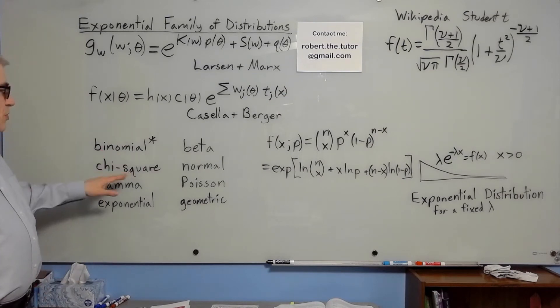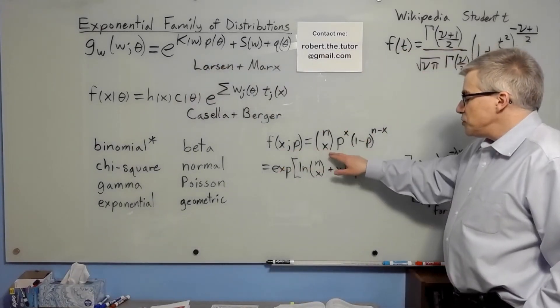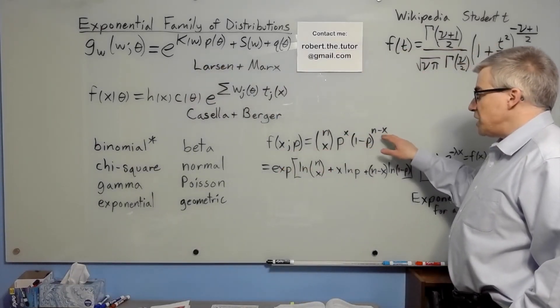An example showing that the binomial is in the exponential family. The density is n choose x p to the x, 1 minus p to the n minus x.